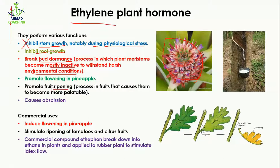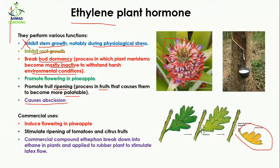Ripening is a process which causes a fruit to become more palatable — meaning the fruit becomes sweet and soft and you can enjoy its taste. It also causes abscission, which is the shedding of leaves. When oxygen is not present, ethylene causes the leaf to break down and shed.